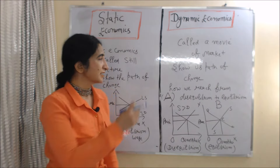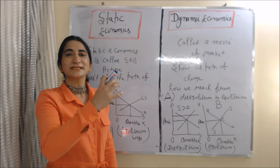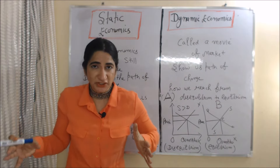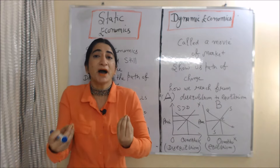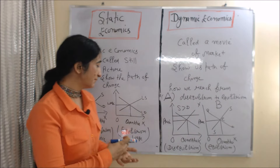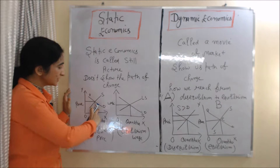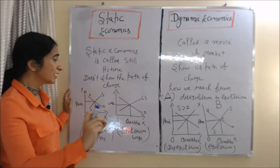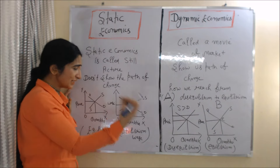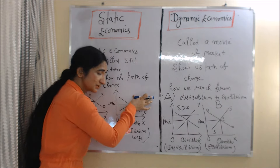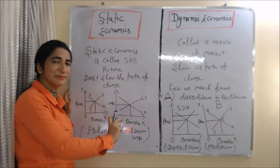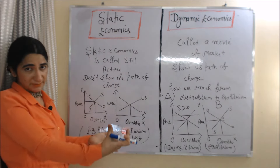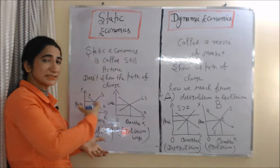The next difference is that static economics is called a still picture, because it doesn't show us the path of changes. For example, static economics only tells us where demand and supply intersect, which is called the equilibrium point, but it doesn't tell us how we achieve this equilibrium point. That's why it's called a still picture.